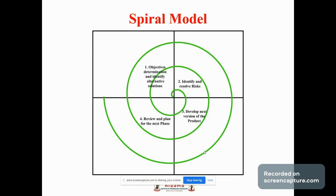The baseline spiral starts in the planning phase where requirements are gathered and risk is assessed. Each subsequent spiral builds on the baseline spiral. In the planning phase, requirements such as BRS (Business Requirement Specifications) and SRS (System Requirement Specifications) are gathered.